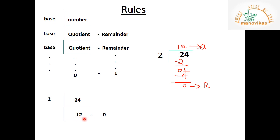Continue the process: divide 12 by 2 to get quotient 6 and remainder 0. Keep doing this process until the quotient becomes 0. At the end, read all the remainders from bottom to top — that will be the binary value of the decimal number you started with.